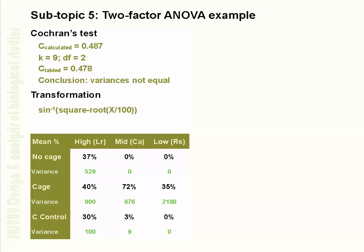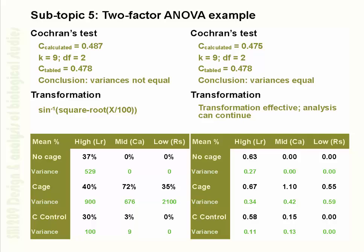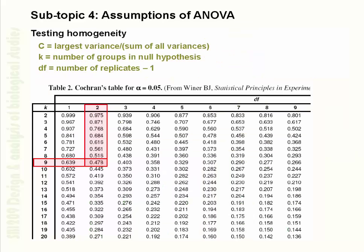When variances are unequal, an appropriate transform for percentage data is the inverse sine (arcsine) of the square root of the proportion. Since the data are percentages, divide by 100 to get proportions, then apply arcsine of the square root. Looking at the transformed data, variance where mean survival is zero is still zero, but variance for intermediate survival has been reduced. Cochran's value is now 0.475, which is less than 0.478, so the transformation has worked and we can proceed with the analysis.